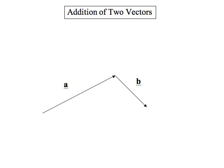Well, then A plus B is the vector going from the tail of the first to the head of the second.